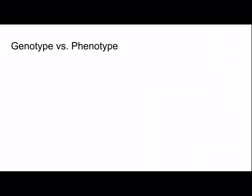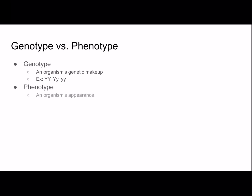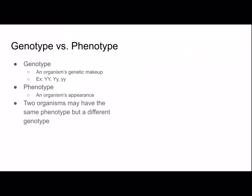Genotype versus phenotype: genotype is an organism's genetic makeup. In this case, we're looking at pea color — yellow is dominant to green. Phenotype is an organism's appearance. Two organisms may have the same phenotype but a different genotype. For example, a heterozygous individual and a homozygous dominant individual for pea color are both going to be yellow, because yellow is dominant.